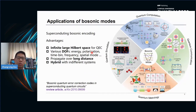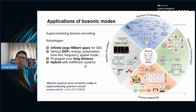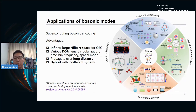During the last few years, superconducting bosonic encoding has been widely applied in quantum science because of its advantages, such as an infinitely large Hilbert space for quantum error correction, and bosonic modes have various degrees of freedom like energy, polarization, time-bin, frequency, and spatial modes. The bosonic mode also has the ability to propagate over long distances and can mediate interactions between various different systems. Here is our recent review article about bosonic quantum error correction codes in superconducting quantum circuits, summarizing their applications in quantum computation, quantum metrology, and quantum simulation.